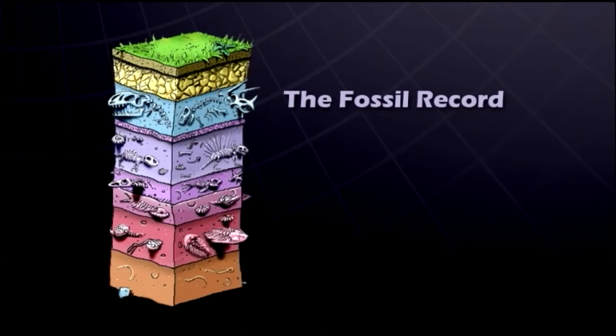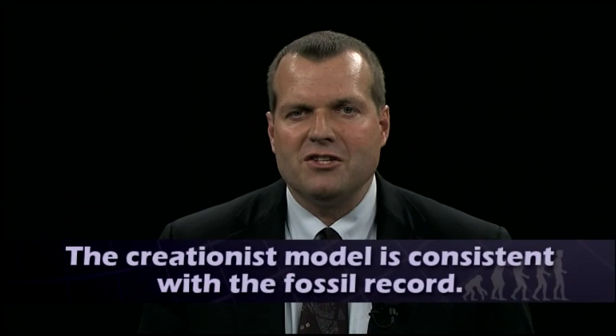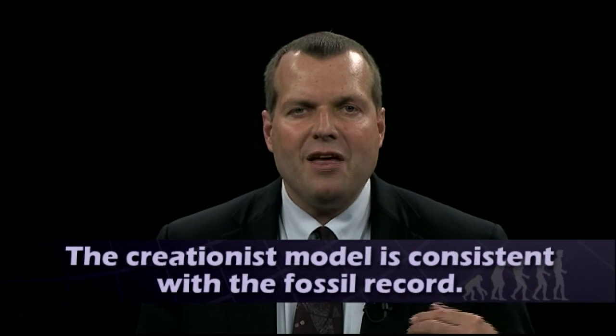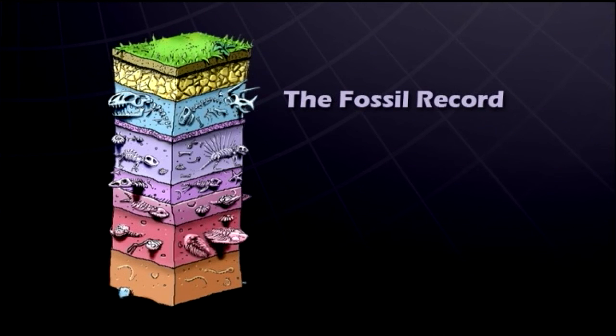Now, talking about the fossil record, there are two ways to look at it. First, there would be the traditional atheistic way, the way that evolutionists look at the fossil record. And then there would be the way that a biblical creationist could look at the fossil record. If we look at an atheistic evolutionist's standard explanation, typically they'll say that fossils formed over millions of years, and the order of burial within the fossil record is related to the time at which organisms evolved. If an organism is found lower in the fossil record, that means it evolved earlier; if found higher, it evolved later.